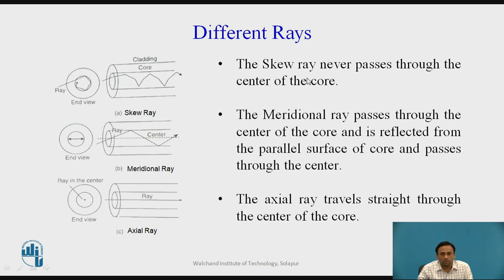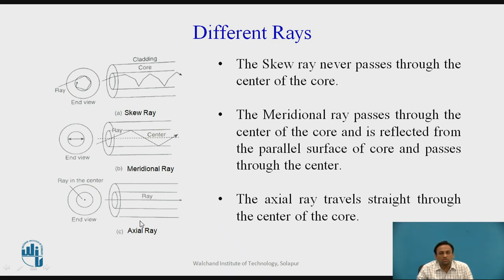Meridional rays pass through the center of the core and are reflected back from the parallel surface of the core, continuing through the center. In the end view they appear as a straight line; in the side view they follow a zigzag path along the core center. The axial ray travels straight through the center of the core and never touches the parallel surface of the core and cladding — it appears as a dot in the end view.